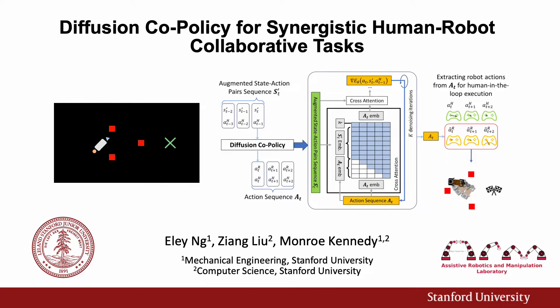We present Diffusion Co-Policy, a method for planning sequences of robot actions that synergize well with humans on physical collaborative tasks.